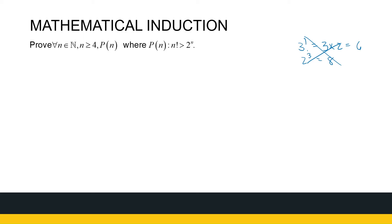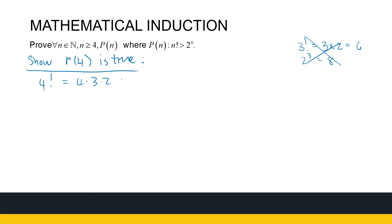The difference here is that our first step is to show P(4) is true, not P(1), because we're starting at 4. So what does P(4) look like? 4 factorial equals 4 × 3 × 2 × 1, which is 24. And 2 to the power 4 is 16. Since 24 is greater than 16, therefore P(4) is true.